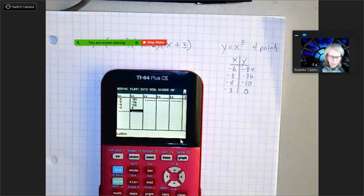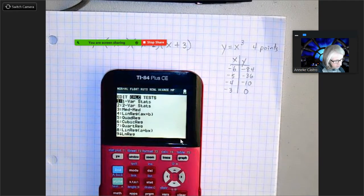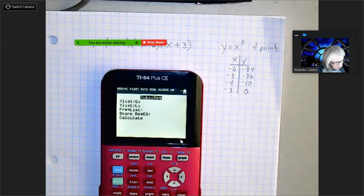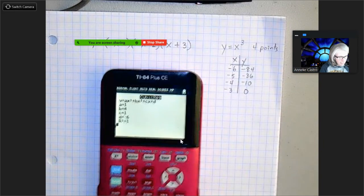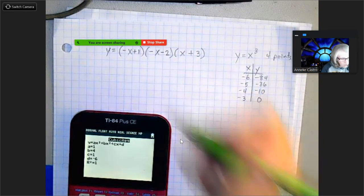Now I'm going to do a cubic regression, so I'm going to go stat calc, choose cubic regression, this one, calculate it. Bam! So now it's giving me my standard form.